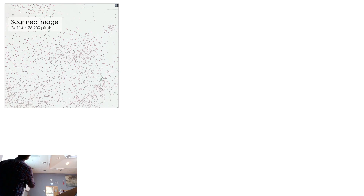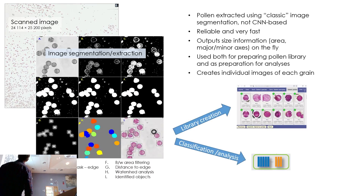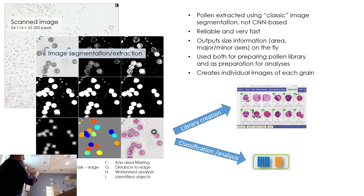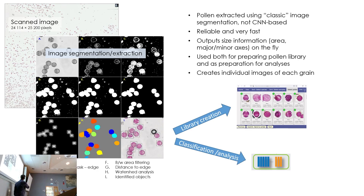This is how the scanned images look — they're really big, like 25,000 by 25,000 pixels. We use standard classic image segmentation, basically the techniques Luca was mentioning before. Those techniques that have been around for a long time work really well because we have rather clean images, so we don't need AI models to segment images. We use all the objects we find, both when creating the libraries and when running samples through, and then classify them.